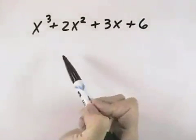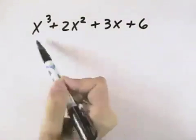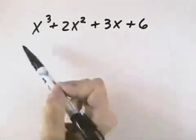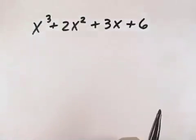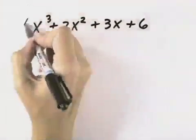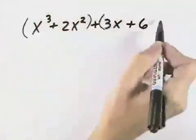In this problem, to factor it completely, we first look for a greatest common factor, and there is none. So then we say there are four terms. The only way to factor four terms is to try grouping. So what I'm going to do here is group the first two and the last two.